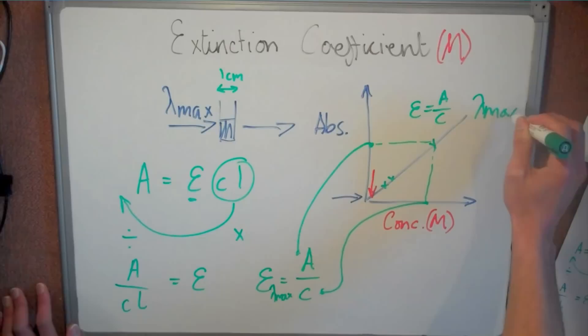The better the compound is at absorbing light, the steeper the line will be, and the higher the extinction coefficient.